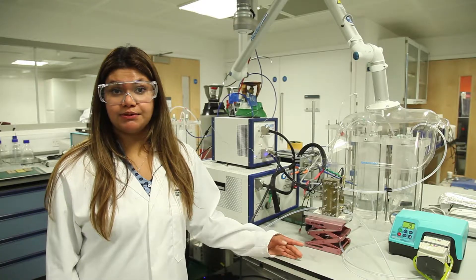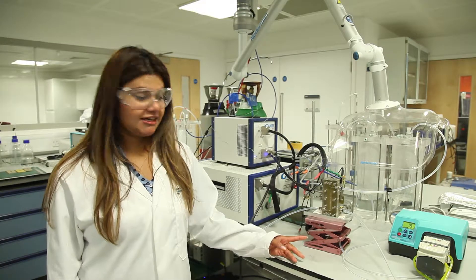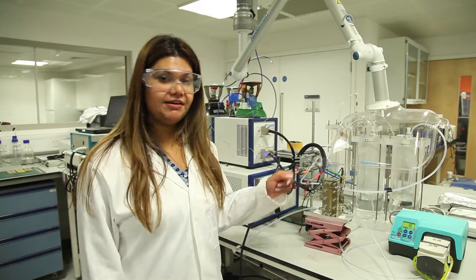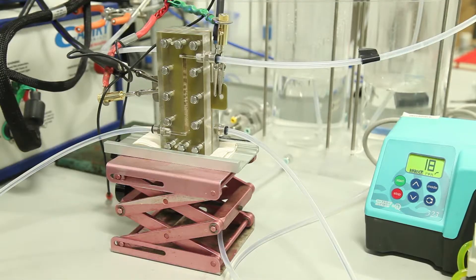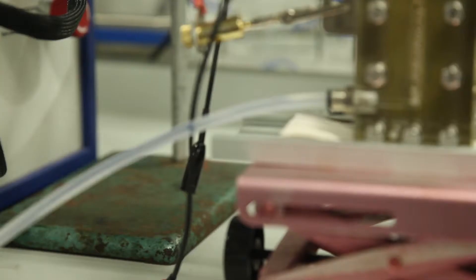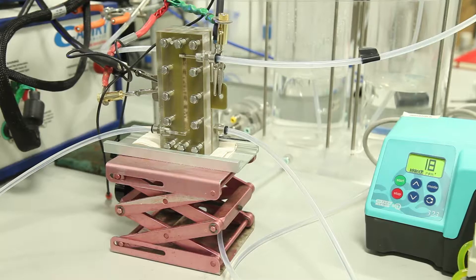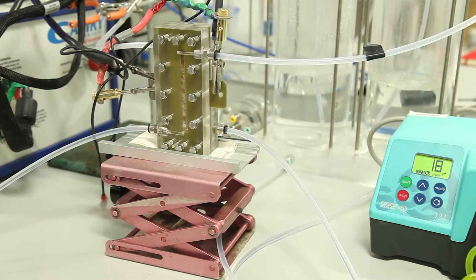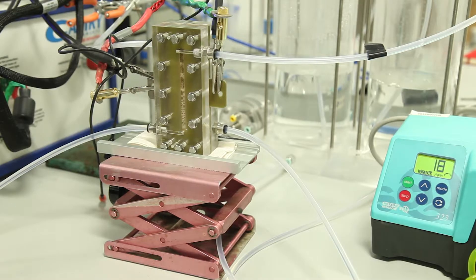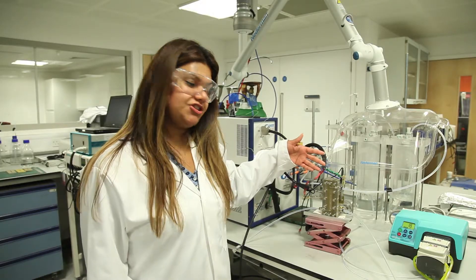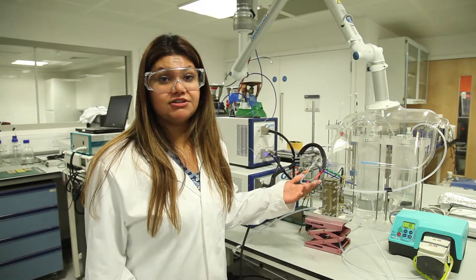For an example, in a proton exchange membrane water electrolyser, like what we have here, water is split into oxygen and protons on the anode and the protons travel through the membrane, for example Nafion, to the cathode to combine with electrons to produce hydrogen and this hydrogen can be used with fuel cells to generate power.